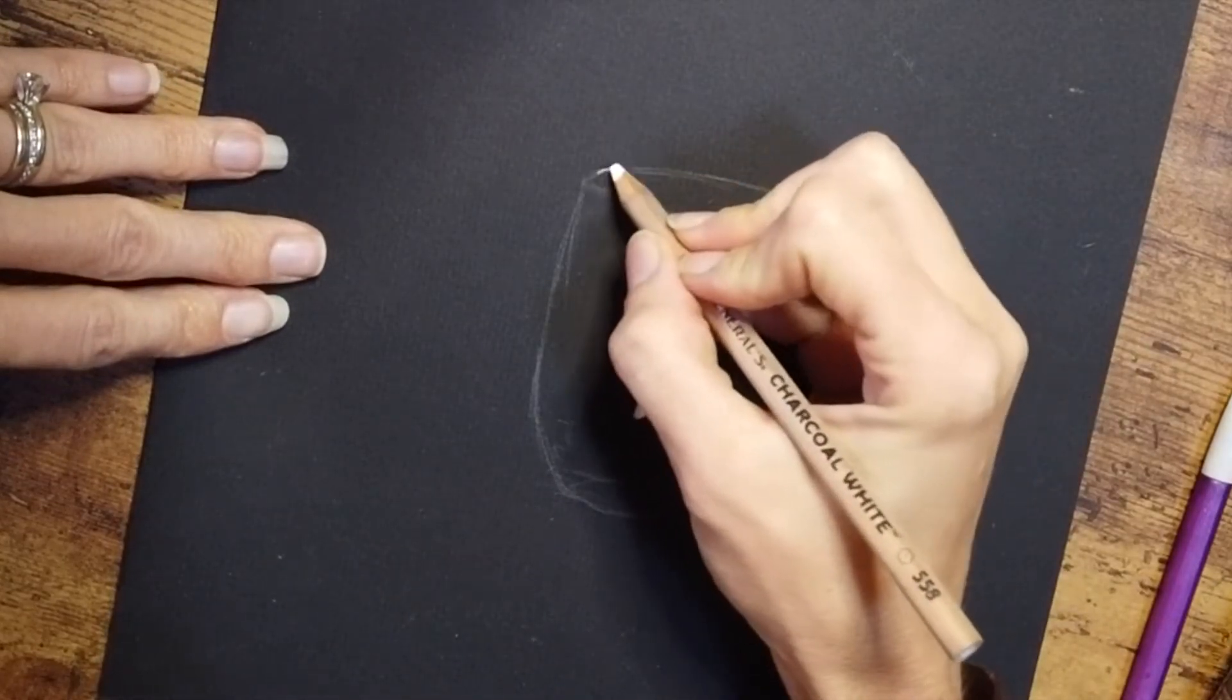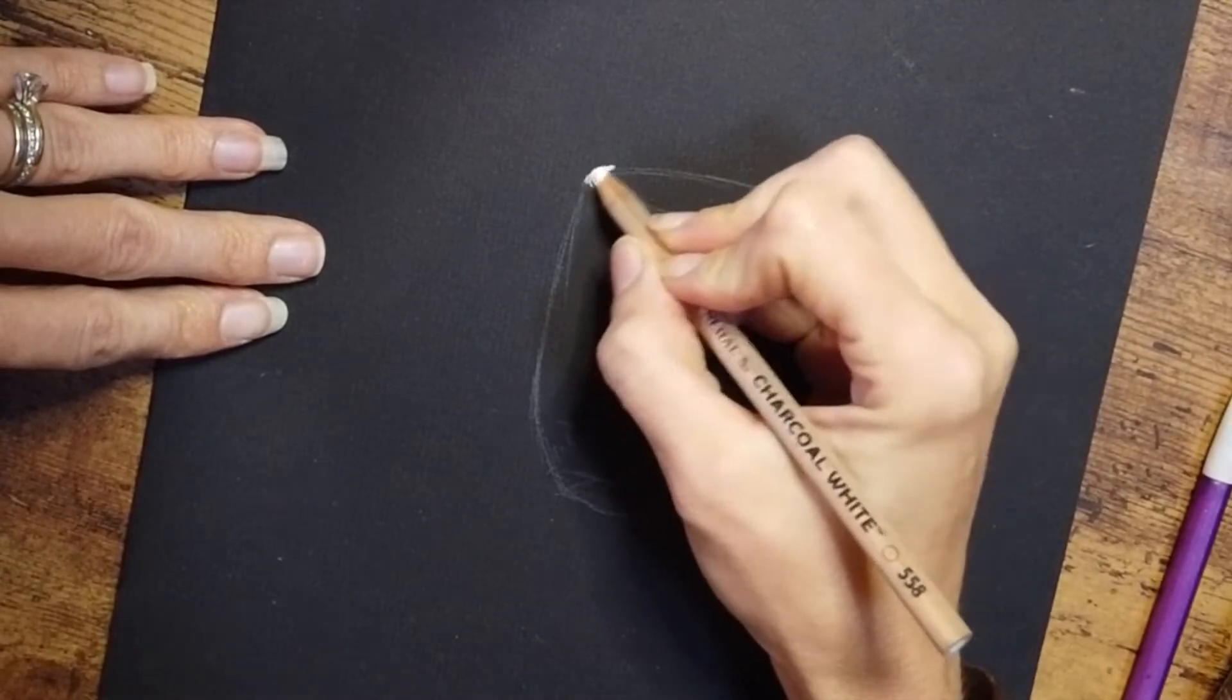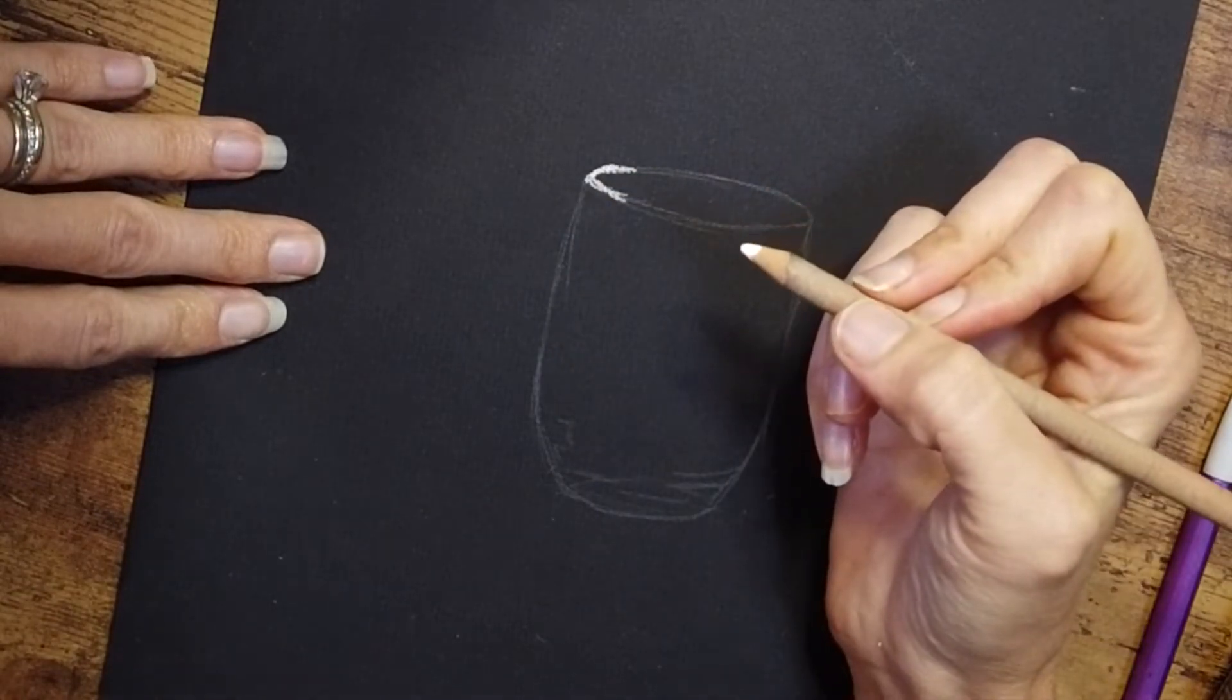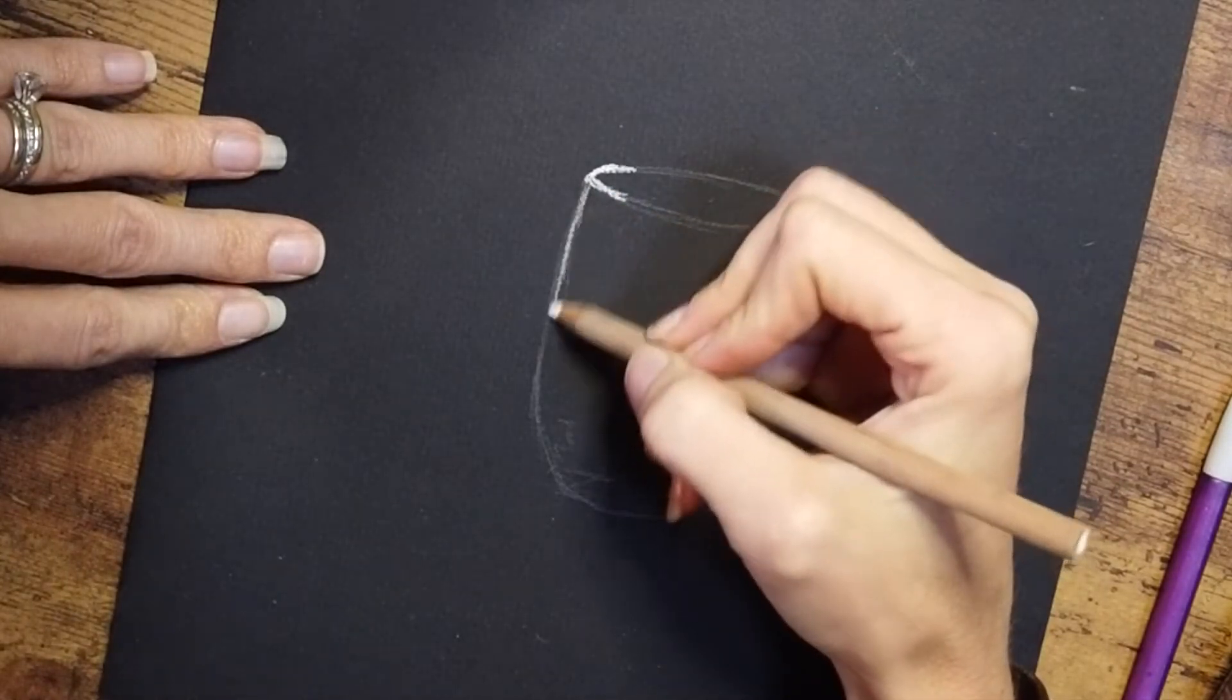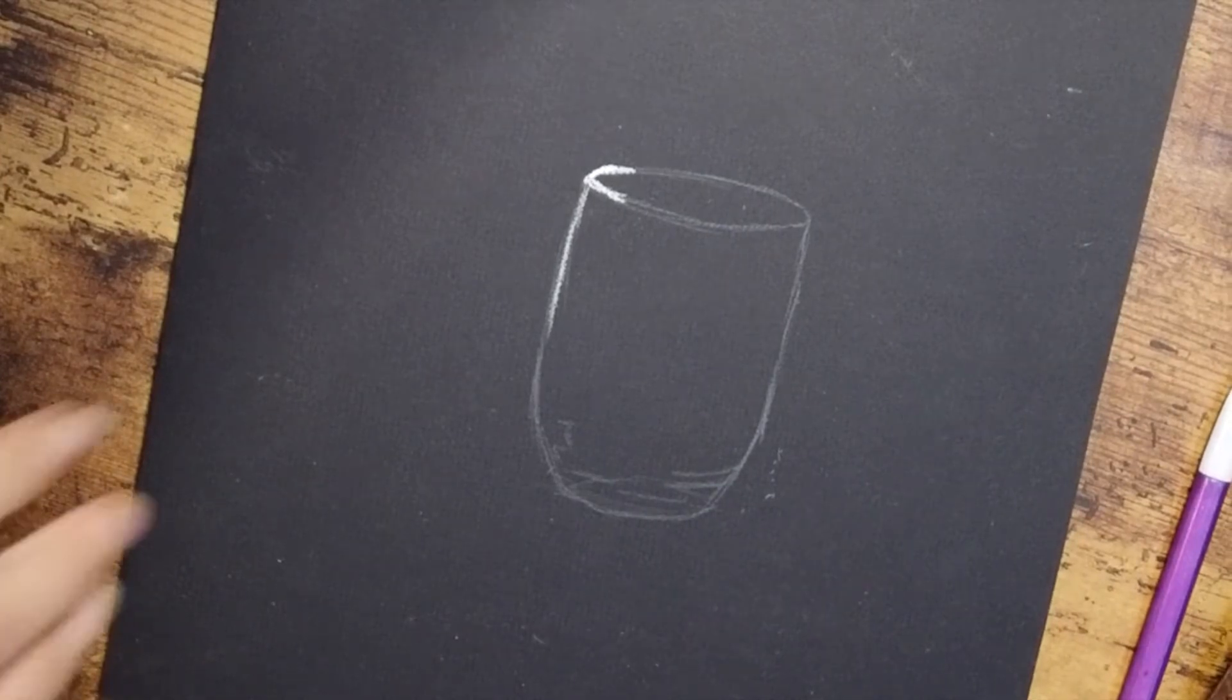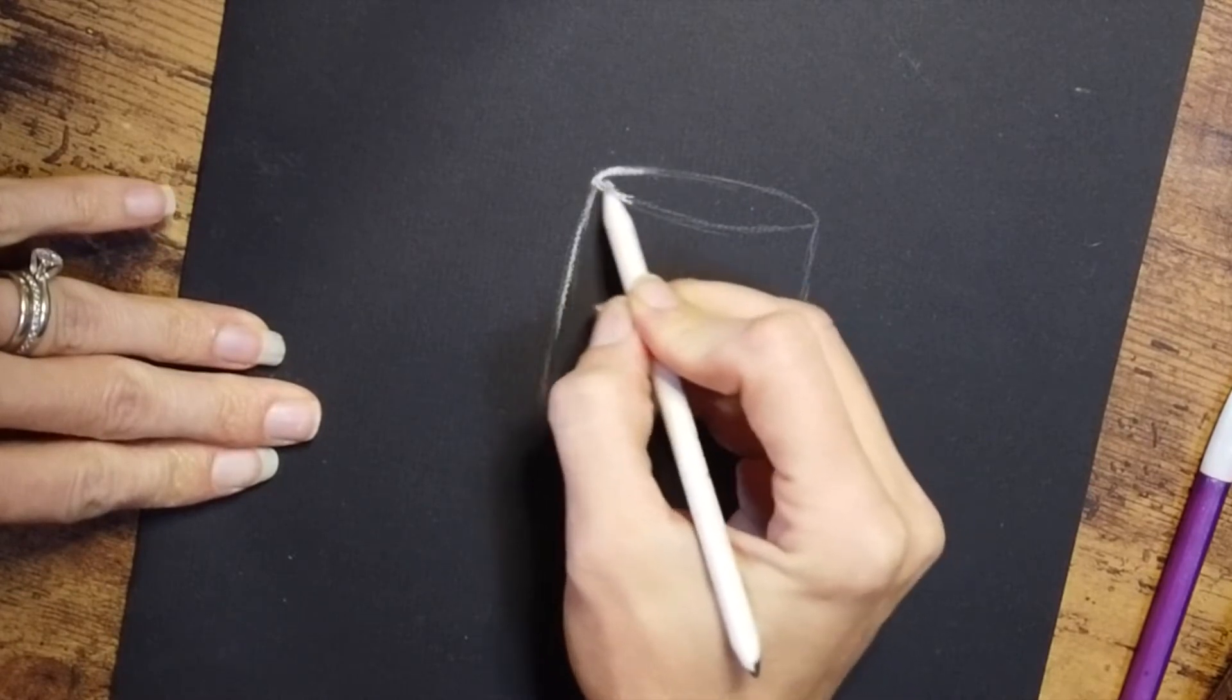So for the rest of this video, just follow along with me as I put in the highlights and use my blending stick to blend those highlights out, and try and copy exactly what I'm doing. You also want to make sure to keep your pencil pretty sharp and your blending stick pretty clean because you don't want to get any of that black charcoal on your blending stick.